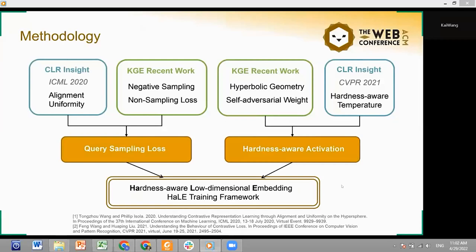Secondly, in the CVPR 2021 paper, scholars found that the temperature trick can distinguish easy and difficult samples and speed up the training process. This insight leads us to discover similar tricks in recent low-dimensional KGE models, and propose a hardness-aware activation function. The above two techniques jointly construct our novel KGE training strategy called HEAL.